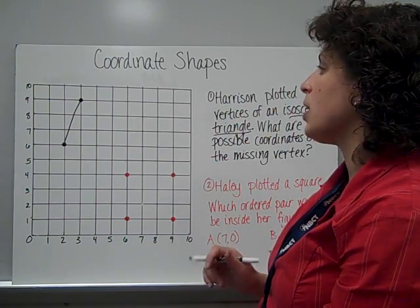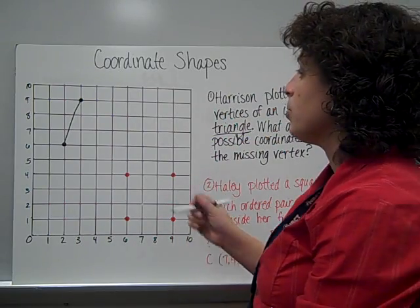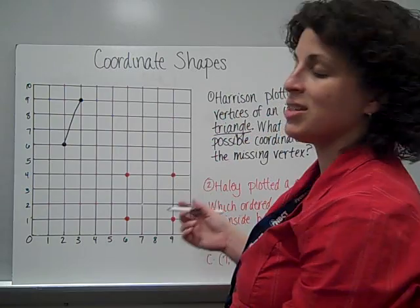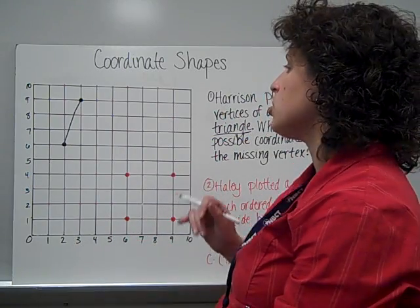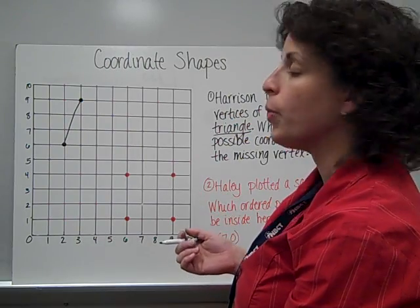Isosceles triangles are triangles that have two sides the same length. Most often it's their left and their right sides. It doesn't have to be. But two sides do have to be equal in length or congruent.